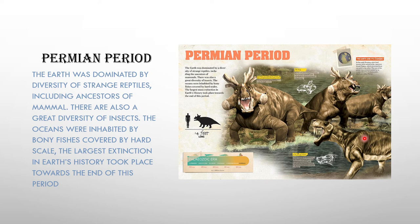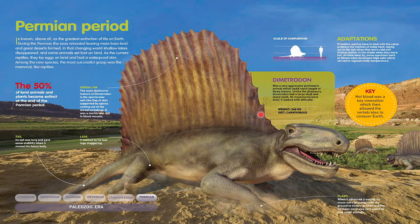The largest extinction in Earth's history took place towards the end of the Permian period. A large meteoroid hit, wiping out almost all life, and the new era — the Mesozoic Era — began, in which the dinosaurs came. The Permian period also had the Dimetrodon, a reptile with a sail on its back. If its sail were broken, it would feel great pain and might die.